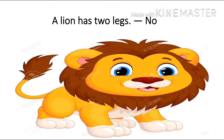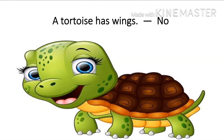A lion has two legs. N-O, No, because a lion has four legs. So we will write N-O, No. A tortoise has wings. A tortoise doesn't have wings — it has a shell. So we will write N-O, No.